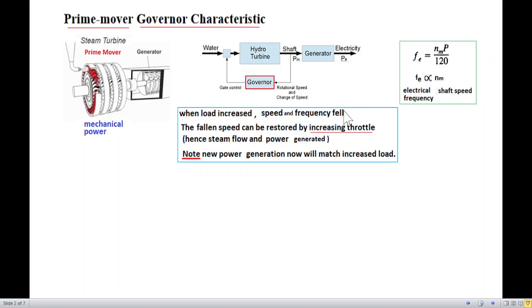And here is another explanation. When load increases, speed and frequency fall down. The fallen speed can be restored by increasing throttle, the steam flow and the power generated. And once we have done this, we have increased the new power generation. Now, we'll match the increased load. And that is what we are going to see in the example.